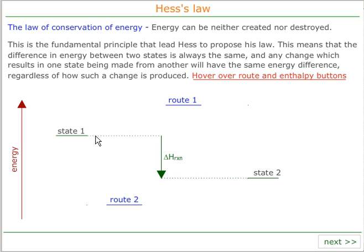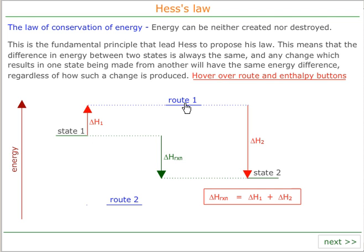If we take a direct route, we could call that delta H of reaction. However, if we go via an intermediate such as route 1, then the sum of the two energy changes — delta H1 and delta H2 in this case — must be equal to delta H reaction.